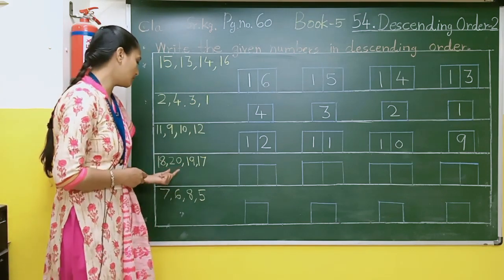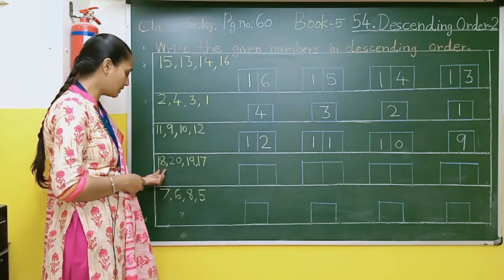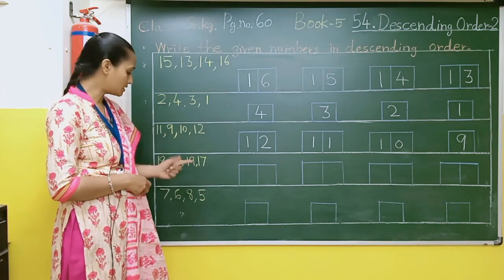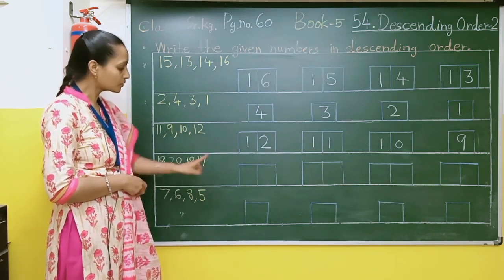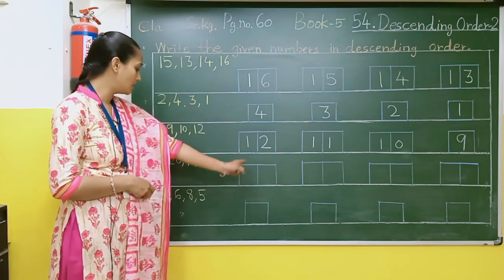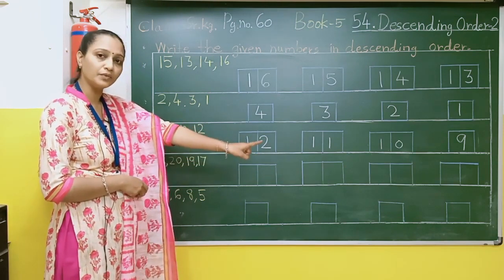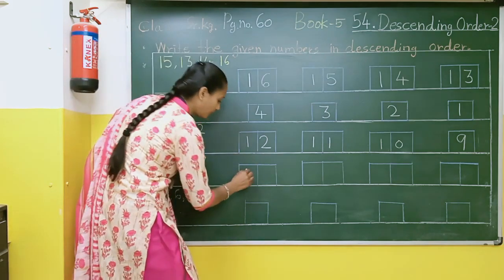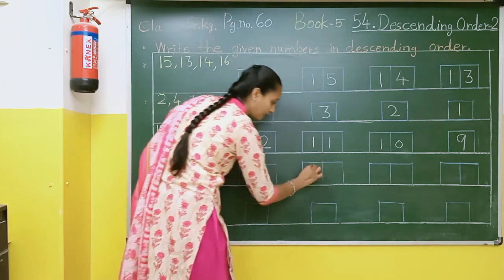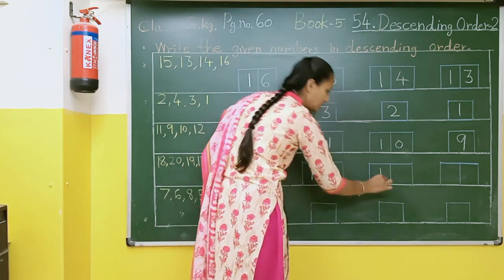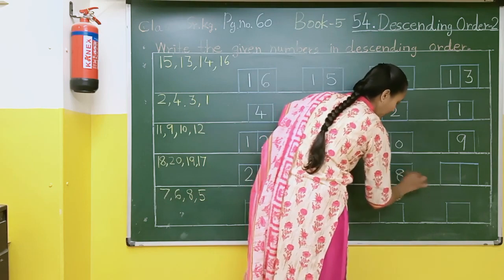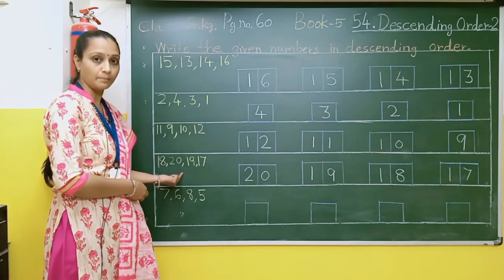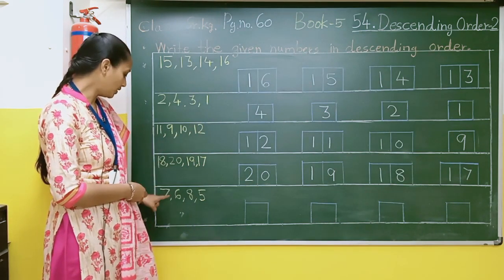Here the given numbers are 18, 20, 19, and 17. So which number is the biggest? 20. So here we will write 20, then after we will write 19, then after we will write 18, and then after we will write 17. So we can arrange these numbers into a descending order.